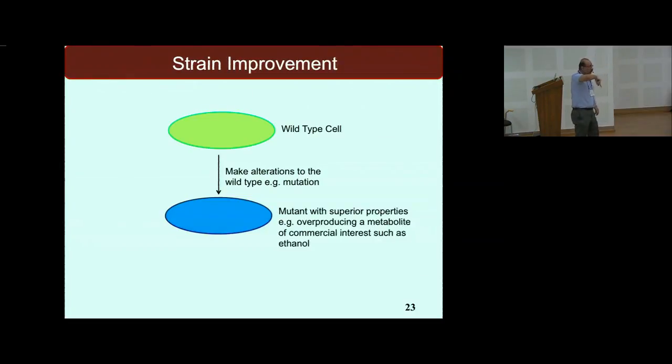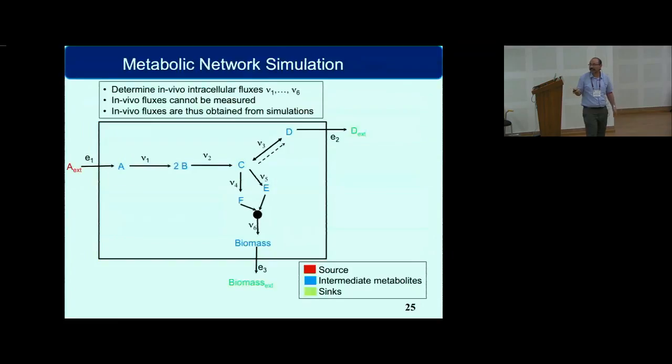The only way to do that is to do some changes to the genome, by which I mean you do certain mutations in the DNA. Because the DNA is the thing that finally regulates all the processes happening in the cell. Although the gene by itself doesn't do anything, it is finally responsible for all the processes happening in the cell. So if you do a mutation, it is possible that you have a mutant with superior properties which overproduces ethanol, and then you're happy that the cell is producing a lot of ethanol.